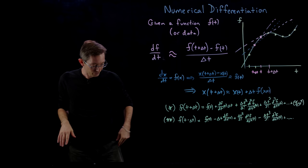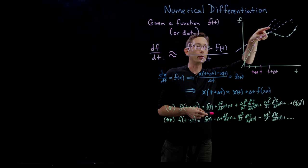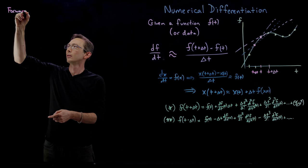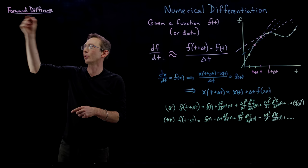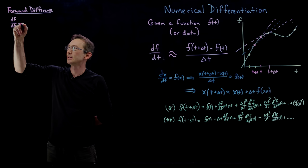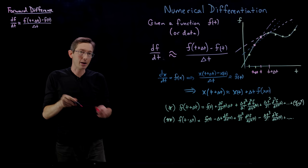Let's start with the simplest one and build to more sophisticated ones. This is called the forward difference, because I take the difference of my point t and a point forward of it at t + Δt. The forward difference scheme says df/dt ≈ [f(t + Δt) − f(t)] / Δt. I'm going to plug in the Taylor series equation, cancel as much stuff as I can, and see how close this equals the actual df/dt.